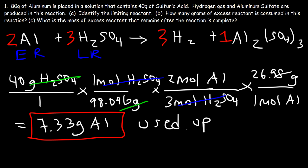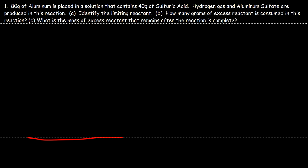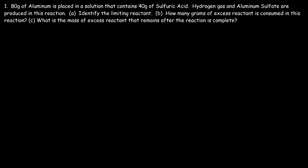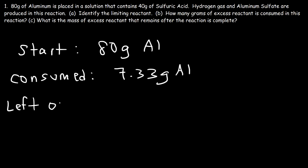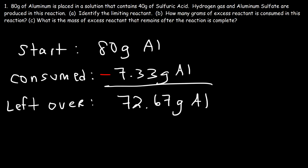So if 7.33 grams of aluminum is consumed in the reaction, what is the mass of the excess reactant that remains after the reaction is complete? We started with 80 grams of aluminum, and during the reaction 7.33 grams was consumed. The amount that remains is the difference: 80 − 7.33 = 72.67 grams of aluminum. That's how much excess reactant is left over after the reaction.